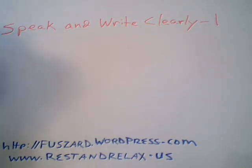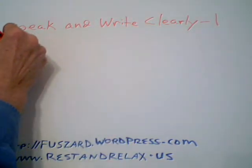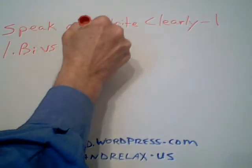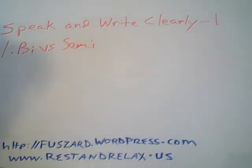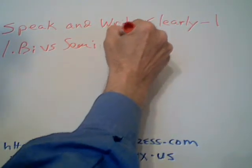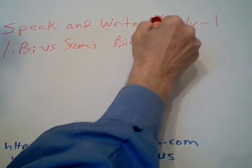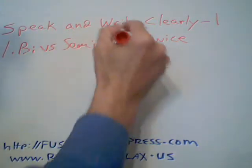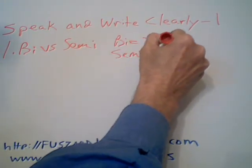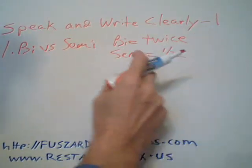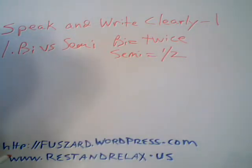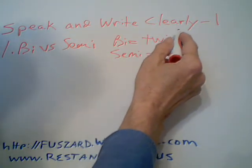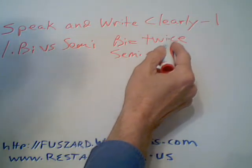Let's first start with bi versus semi. Bi means twice, whereas semi is one half. For example, you get paid semi-monthly, which would be the 15th and the 30th, or the legislature meets bi-annually every two years.